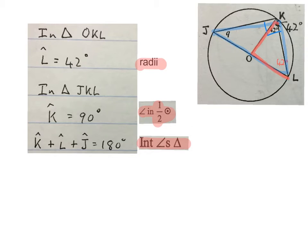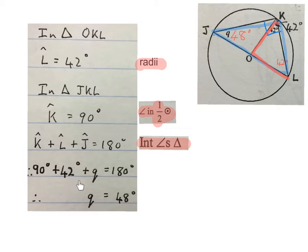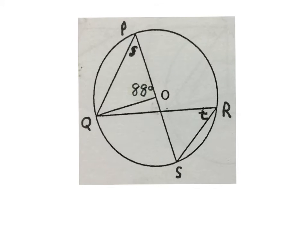Now going into the blue triangle JKL: angle K equals 90 degrees — angles in a semicircle. Staying in triangle JKL, angle K plus angle L plus angle J equals 180 — interior angles of a triangle. Substituting: 90 plus 42 plus Q equals 180. Minus those two numbers from 180, giving Q equals 48 degrees. I fill this in on my sketch.